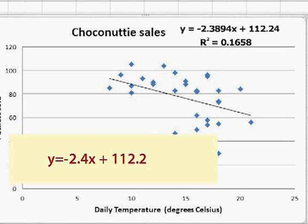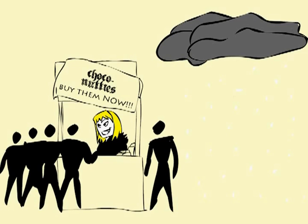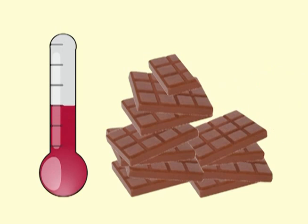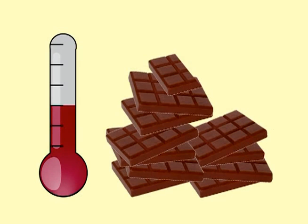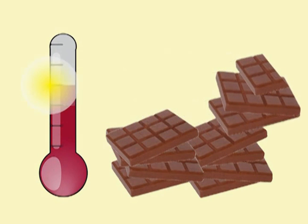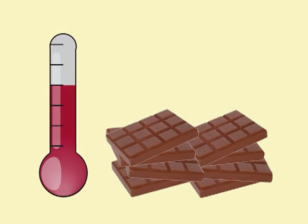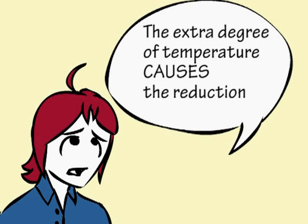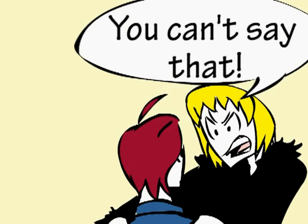In the videos on scatter plots and regression, Helen explored the effect of temperature on sales of Chocanattis. She found that for each degree of temperature, the sales of Chocanattis decreased by 2.4 packets on average. We cannot say that the extra degree of temperature causes the reduction in sales.